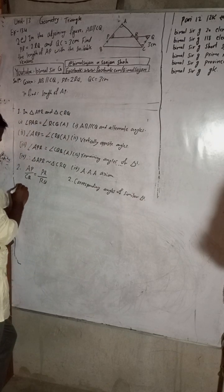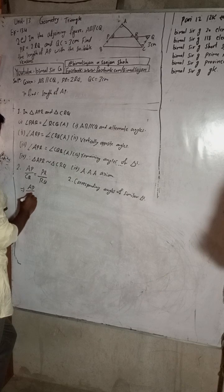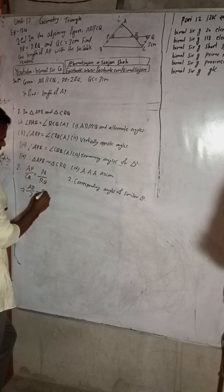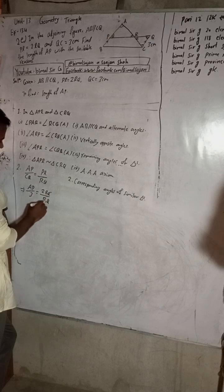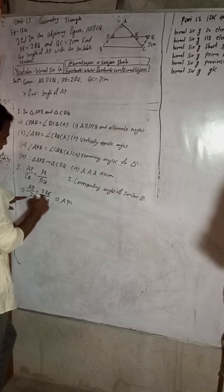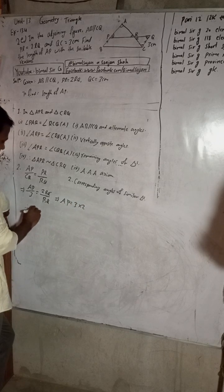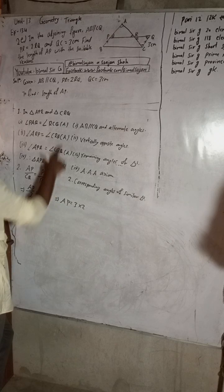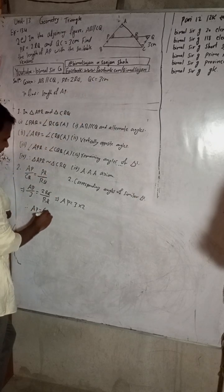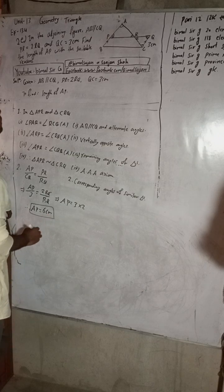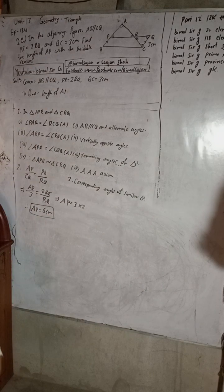Now solve this: AP over CQ equals PR over RQ. Since PR equals 2RQ, substitute to get AP over CQ equals 2RQ over RQ. RQ cancels, so AP equals 2 times CQ. Since CQ equals 3, we get AP equals 2 times 3 equals 6 cm. Therefore AP is equal to 6 cm.